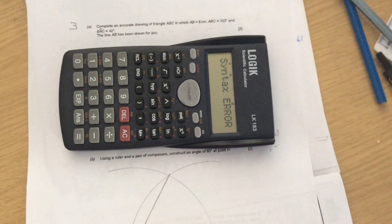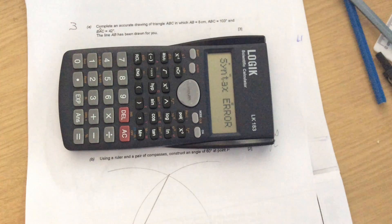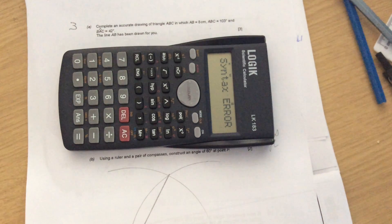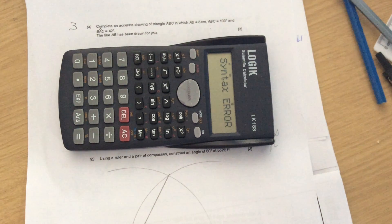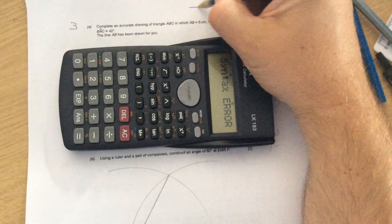Question 3: complete an accurate drawing of triangle ABC in which AB is 8 centimeters, angle ABC is 103 degrees, angle BAC is 42 degrees, and line AB has been drawn for you.